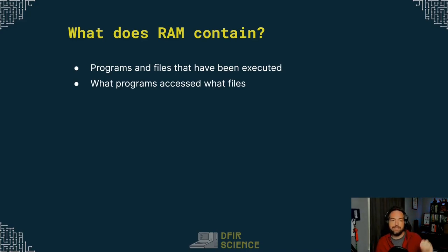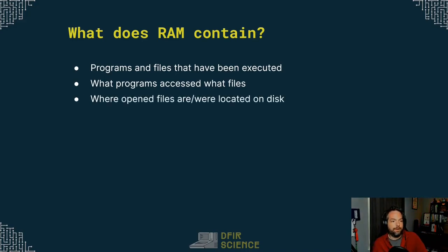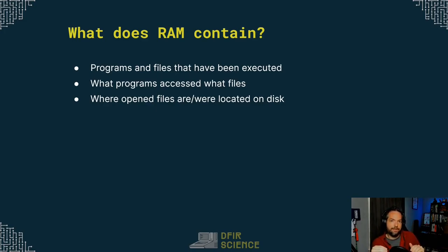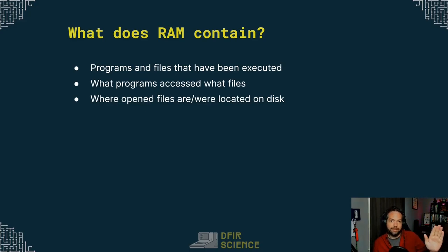What programs accessed what files, and where opened files were located on disk. Just like I said, if you open a file and you have to decrypt it, the decrypted version of the file is in memory. If you open up a file, it gets loaded into memory. And then if you delete the file from the hard drive, the copy on the hard drive is deleted, but the copy in RAM still exists — if you have the program open that opened that file, that copy is still going to be in memory.